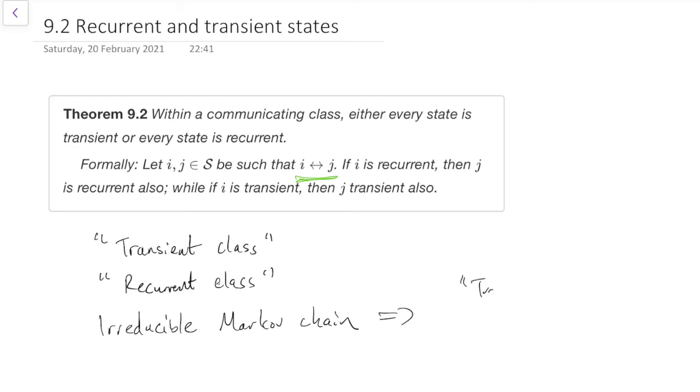We can call it a transient Markov chain or a recurrent Markov chain. Obviously, that doesn't make sense if it's not irreducible, because it may be that some of the states are transient and some are recurrent. But if it's irreducible, then they're either all transient or all recurrent.